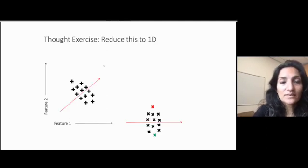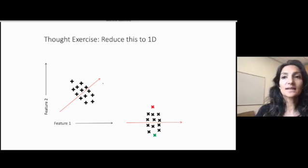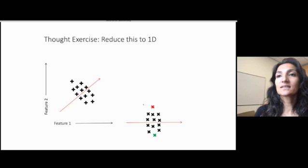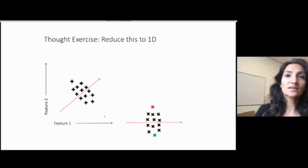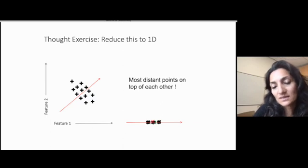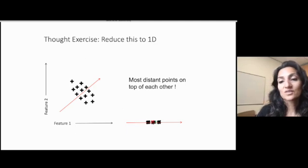So let's take a random line and see if it would be a good line we want to project the data to. So if we use this line and projected all the data to this line, it would look like this. But what you notice is that these two data points, which are the farthest from each other, are right on top of each other in this line. So this line causes you to lose a lot of the structure in the data. So potentially it's not the best line to project to.